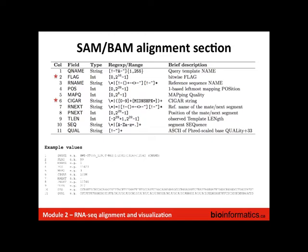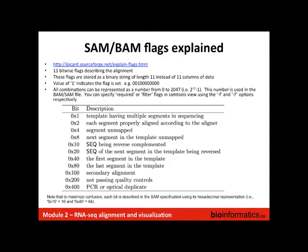Then you have RNEXT and PNEXT — the name of the reference sequence and position of the mate. If you have paired-end reads, you have the start position of read one and it tells you where read two went — what chromosome and start position. Then the template length, the sequence itself reproducing the actual nucleotides, and the quality string reproducing per-base quality. The mapping quality gives a score for the overall alignment for that read. Flags are really hard to understand until you've played around with them — there's a nice web resource for understanding them.